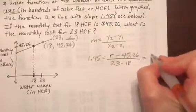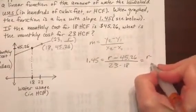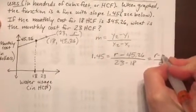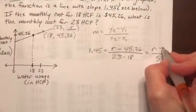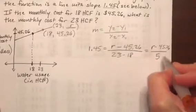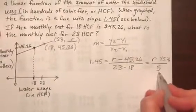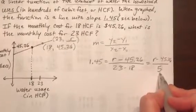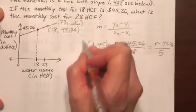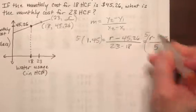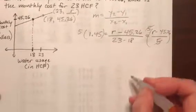And of course, 23 minus 18 simplified would just be 5. And so we'd have now r minus $45.26 over 5. To solve this equation, we would multiply both sides by 5. So multiply by 5 over here and multiply by 5 over here. That will get rid of our denominator.